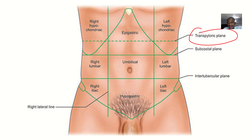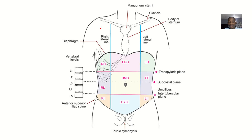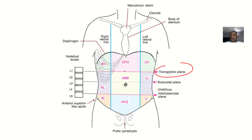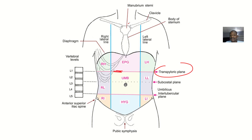This line is in between the abdomen and thorax. We talk about this line from the definition, we get to see it on pictures, we talk about its significance and its importance. For the definition, the transpyloric line — deep down here is where you find the pylorus, which is where the stomach is joining to the small intestine. The pyloric line is an imaginary horizontal line that passes through the pylorus. The pylorus is the region of the stomach that connects to the small intestine. This line is also used as a reference point in anatomy and surgery. It's a very important line — a lot of structures lie below this line.